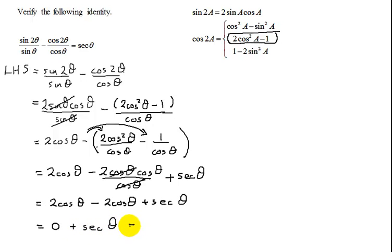And what is 0 plus sec theta? It is just sec theta, which is my right hand side. Because remember that is what we were trying to prove the left hand side equal. So I am done. I have proved the left hand side equals the right hand side.